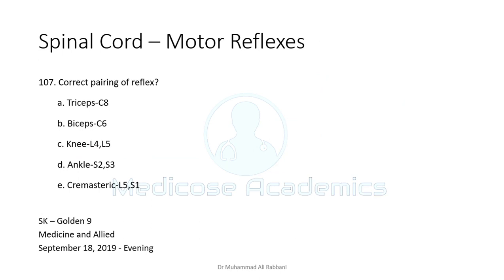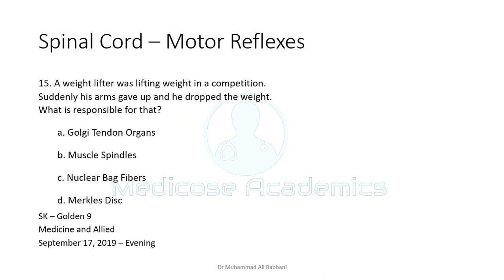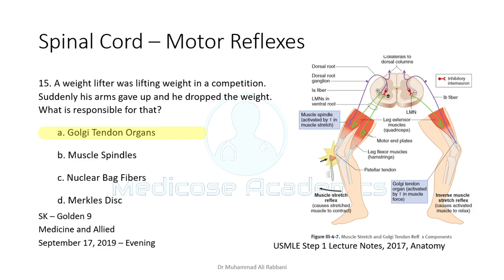For deep tendon reflexes you should know the root values. The biceps reflex is at C6. Regarding the Golgi tendon organ: a weight-lifter dropping weight during competition demonstrates the inverse muscle stretch reflex. High tension developed in the muscle and tendon activates the Golgi tendon organ, which through an inhibitory interneuron causes relaxation of the muscle. The Golgi tendon organ activates the inverse muscle stretch reflex in cases of high tension.